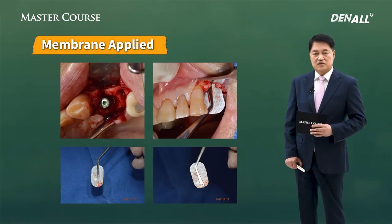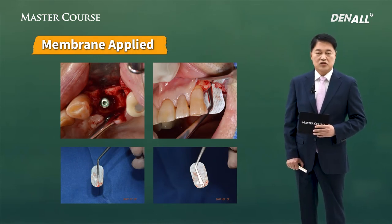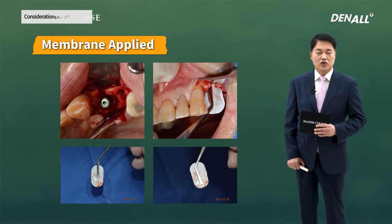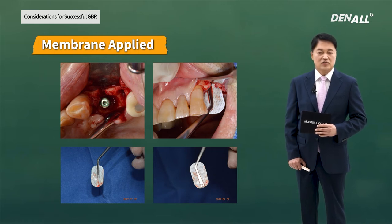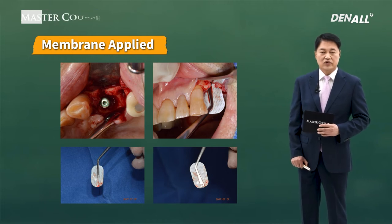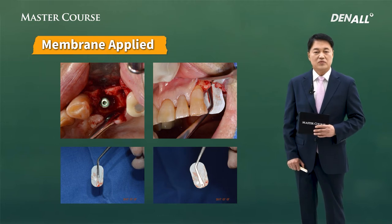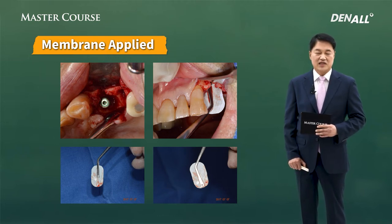When you put in the membrane, if you continue to push it in using tissue forceps, it might crumble. So you need to hold it fully and then put it in so that it goes in without crumbling to the desired position. When you want to take it out, pull it from the palatal side. When you put in the membrane, you need to hold it fully and use tissue forceps carefully. Please remember this.